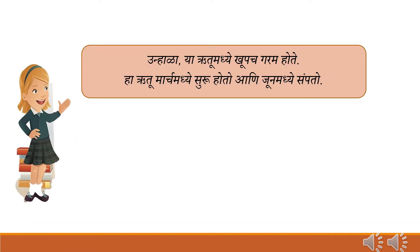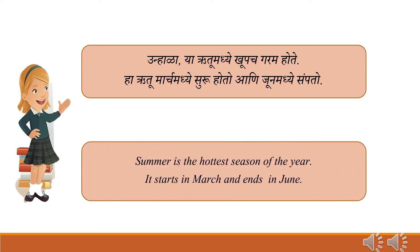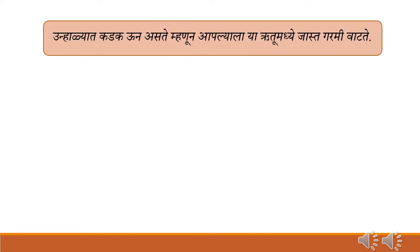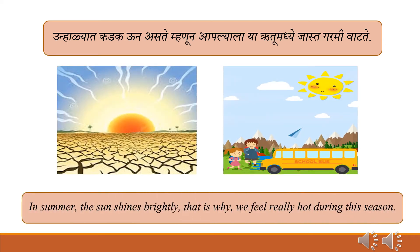In the summer season it is very hot. It starts in March and ends in June. Summer is the hottest season of the year. In summer, the sun shines brightly. That is why we feel really hot during this season.